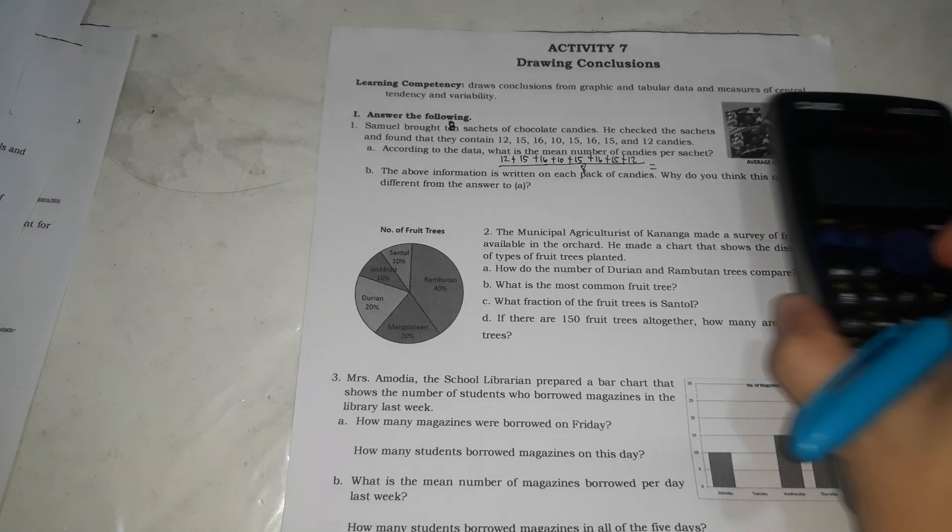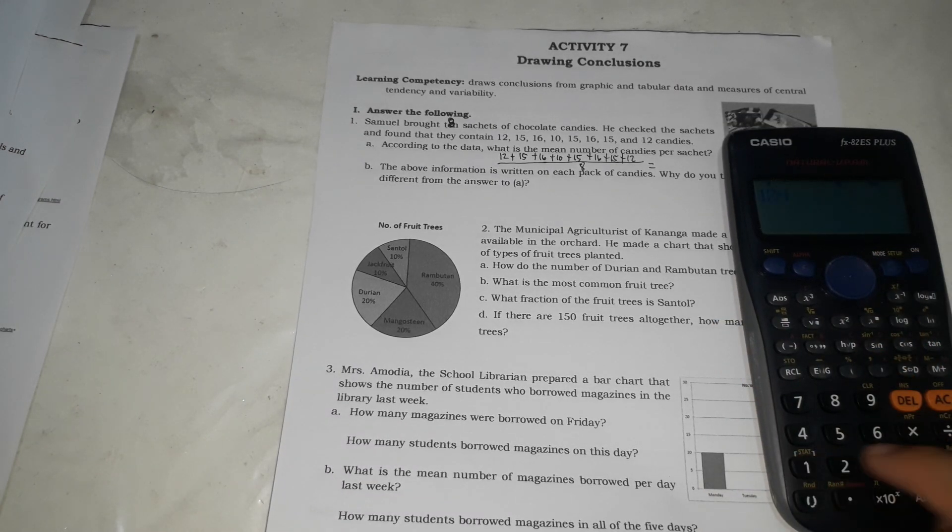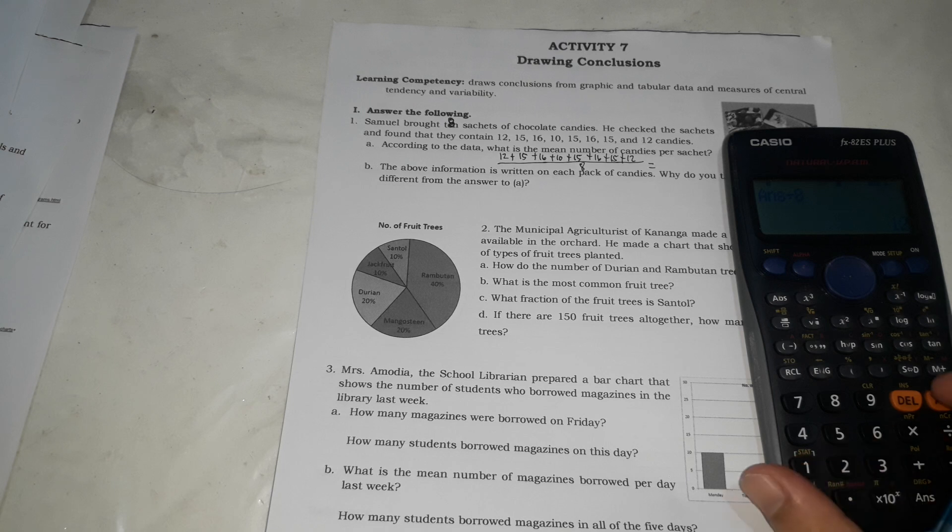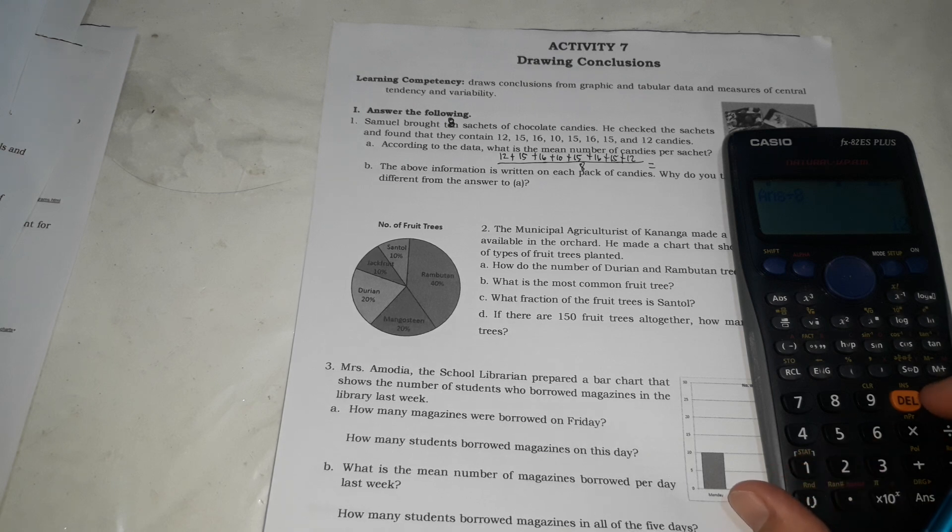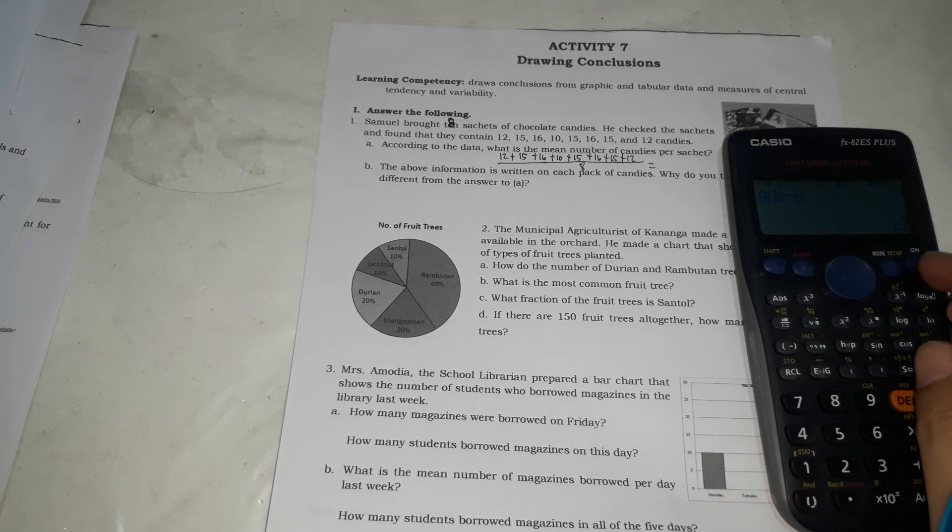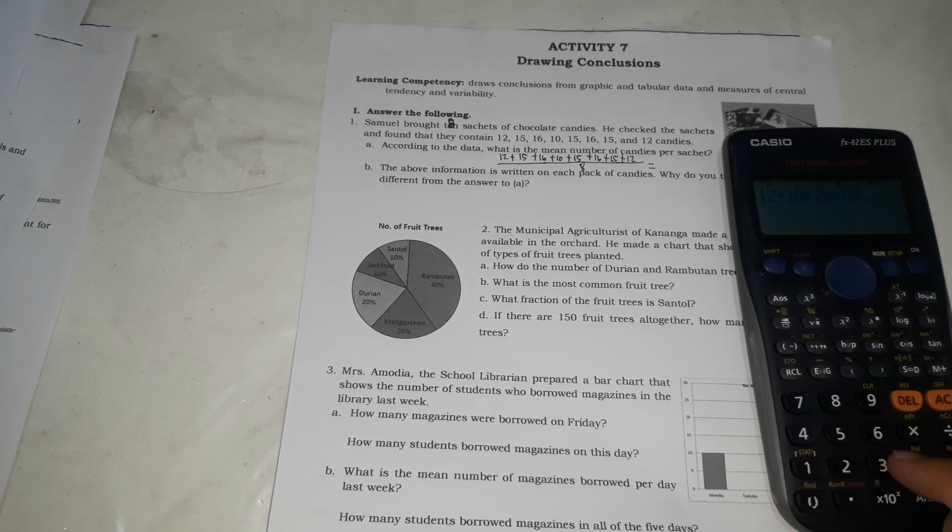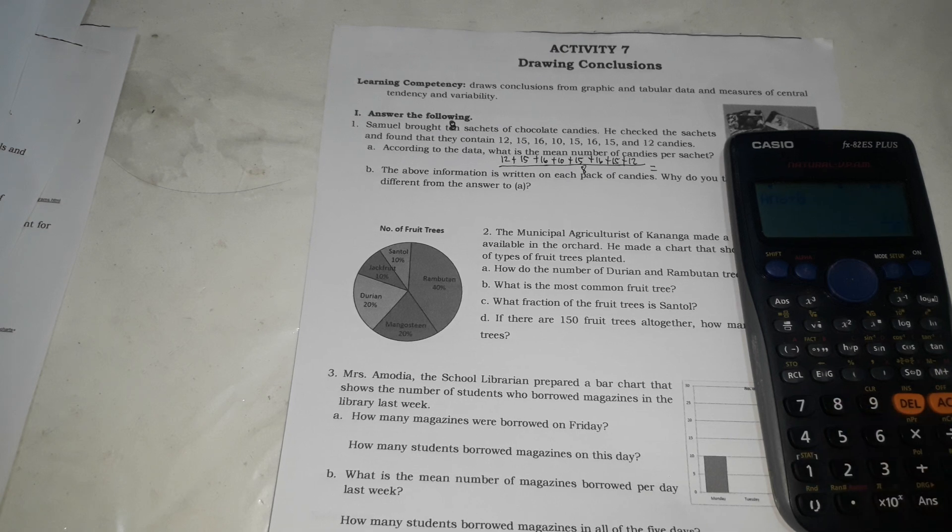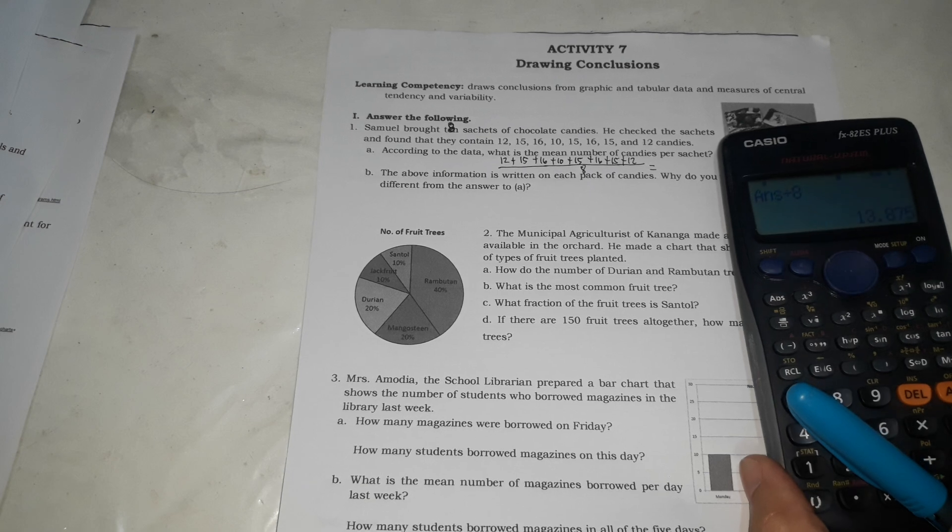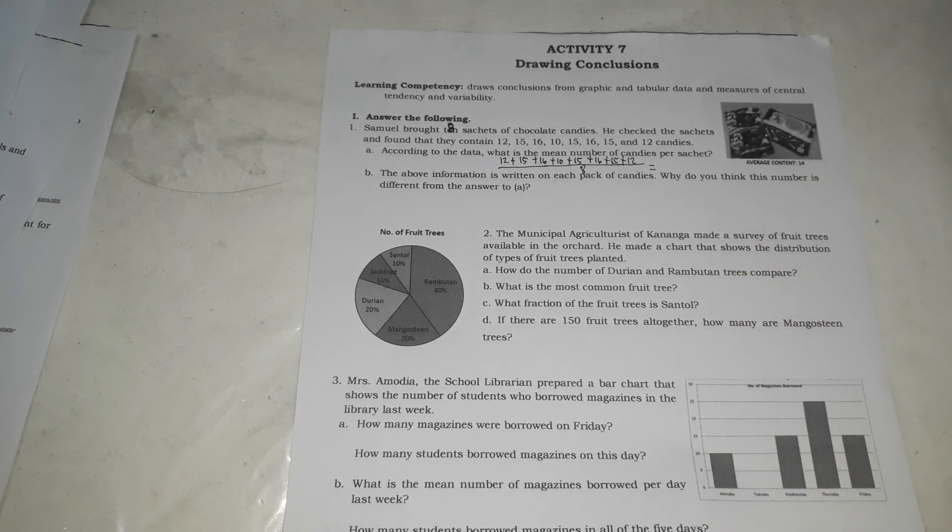So, divide by 8. And then, that's the mean. 12 plus 15 plus 16 plus 10 plus 16 plus 15 plus 12 divided by 8. It's 13.875.